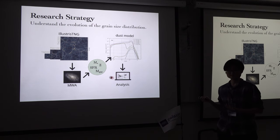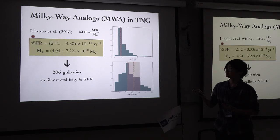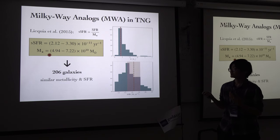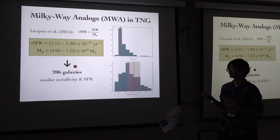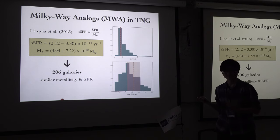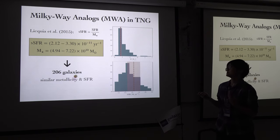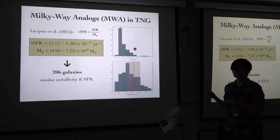We also do analysis on the extinction curve. Here is our galaxy sample. We select Milky Way-like galaxies based on specific star formation rate and mass constraints, selecting 206 galaxies from IllustrisTNG. We can see that the metallicity and star formation rate are roughly similar to the Milky Way.